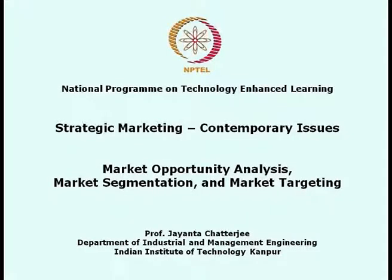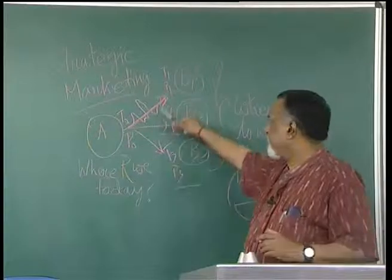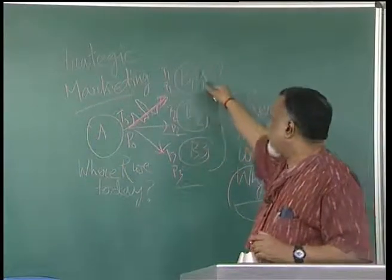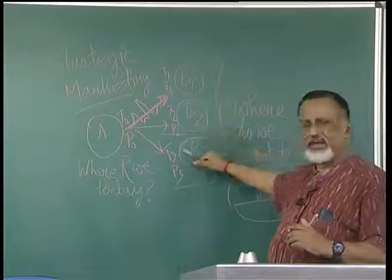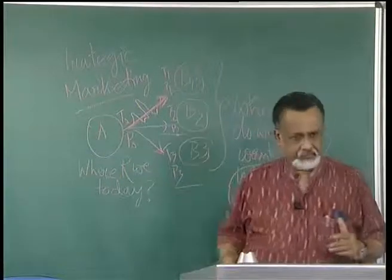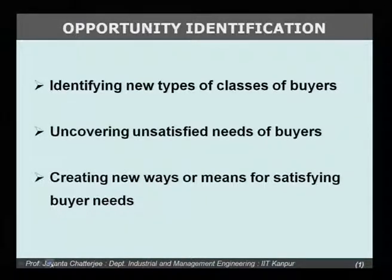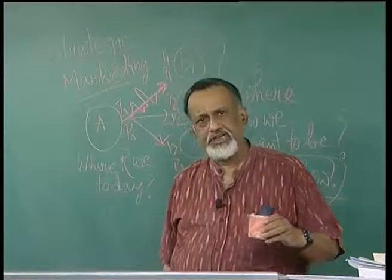We are now looking at how to analyze these marketing opportunities, how to segment them, what is the nature of B1, B2, B3, and how we actually plan to get there. This opportunity identification — B1, B2, B3 — fundamentally means identifying new buyers, but it could also mean identifying new opportunities with existing buyers.